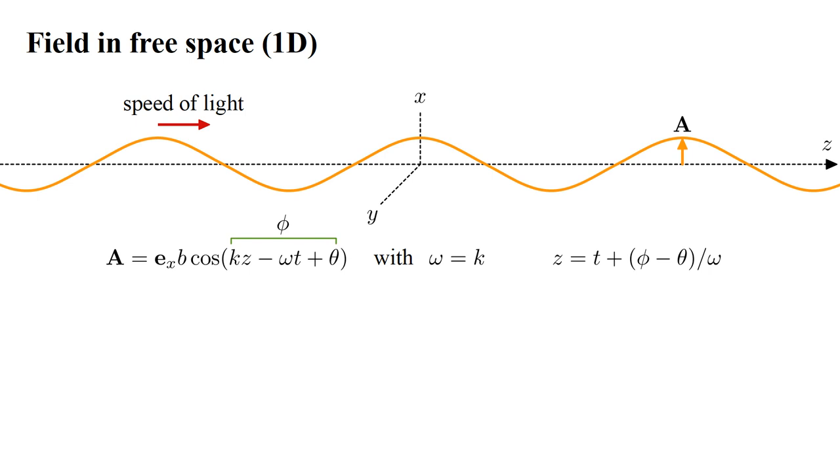To see that this is a traveling wave, we set the cosine's argument equal to a constant φ and solve for z. We find z = t plus a constant. So for each increment of time, a given point on the wave moves a corresponding increment along the z-axis.